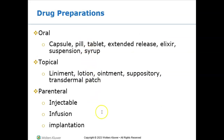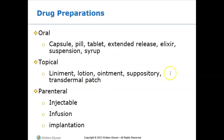Here are some different preparations of how drugs come and can be given to patients. Most of the time you'll have oral medications and they come in a variety of formats: capsule, pill, tablet, extended release — you'll often see 'ER' in the name, meaning extended release. An elixir is a liquid, as are syrups and suspensions — honestly, to me they're all just a liquid.